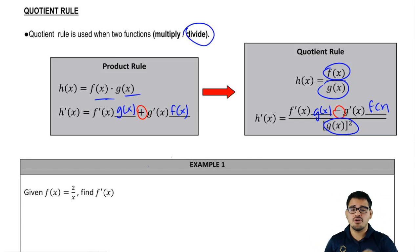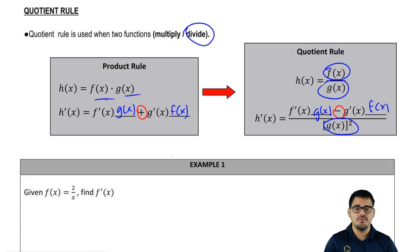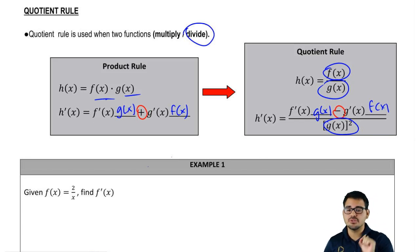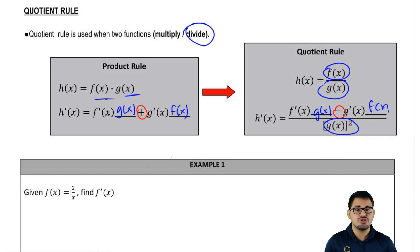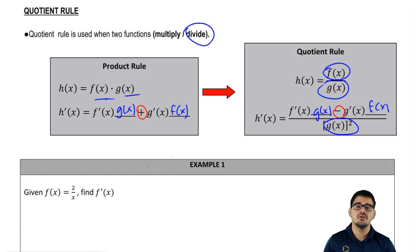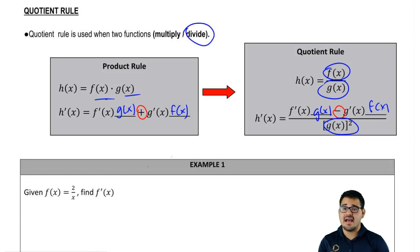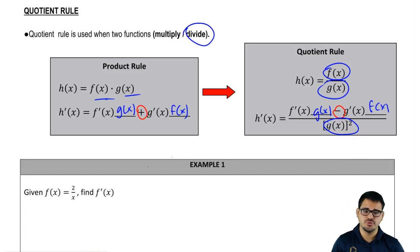Let's go over how to say the quotient rule. We start with bottom squared, and then on top: derivative of the first times the second, minus derivative of the second times the first. One more time: bottom squared, and on the top, derivative of the first times the second, minus derivative of the second times the first. And that's how we do the quotient rule.